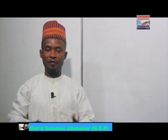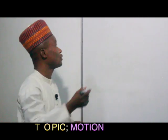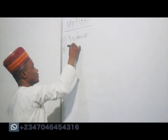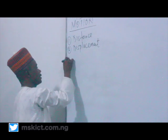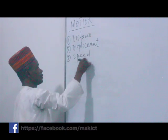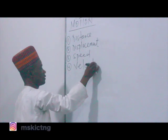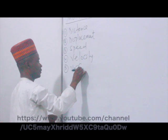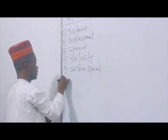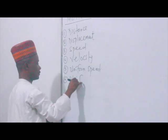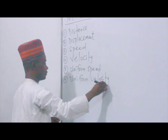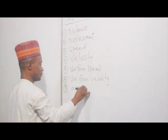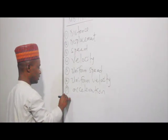There are parameters that we need to explain every single time we are explaining motion. These parameters include: one, distance; two, displacement; three, speed; four, velocity; five, uniform speed; six, uniform velocity; seven, acceleration; eight, retardation.